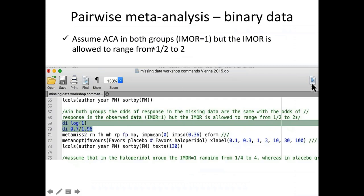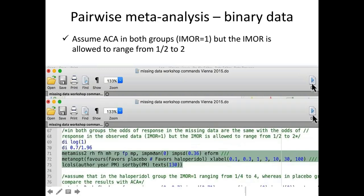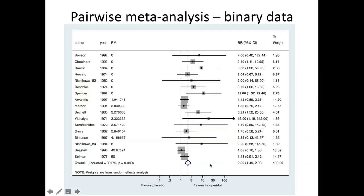Now let's assume ACA in both groups — that is, IMOR equals 1 — but allow the IMOR to range from 0.2 to 2, introducing uncertainty into our assumption. To implement this, we define the standard deviation of the IMP parameter using the formula derived from the confidence interval formula, giving a standard deviation for the log IMOR of 0.36. We run the command with impmin 0 and impsd 0.36 and obtain the results.